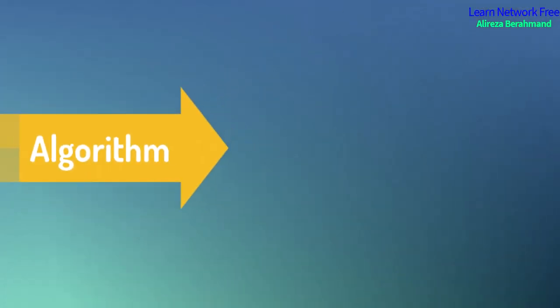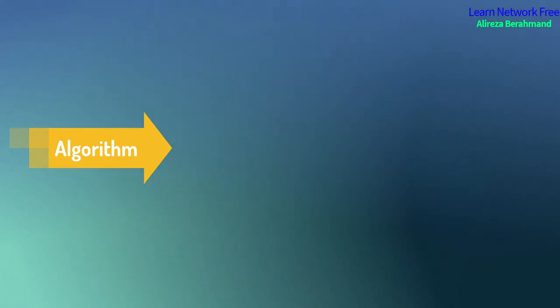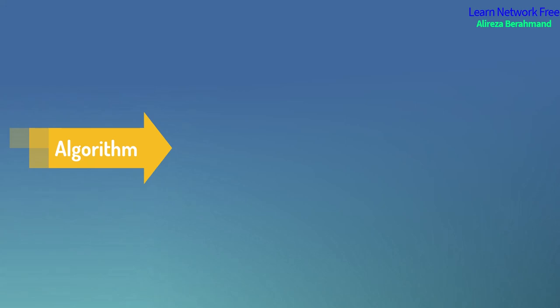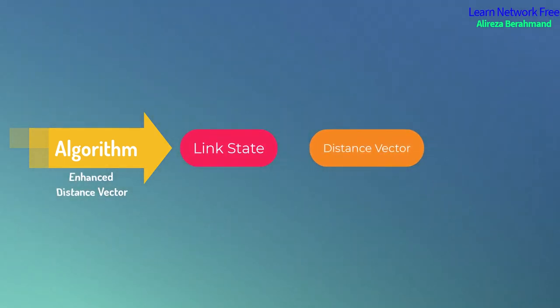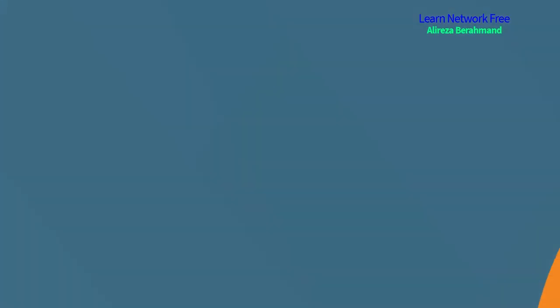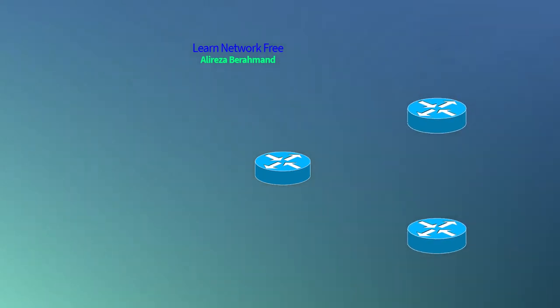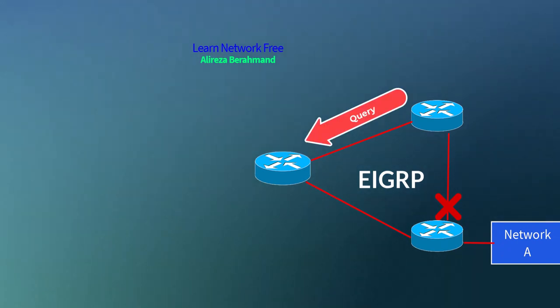What makes EIGRP different? The algorithm. Algorithm is a significant part that makes EIGRP an efficient and flexible protocol. EIGRP is an enhanced distance vector — a combination of distance vector and link state. Here's an overview of EIGRP features.